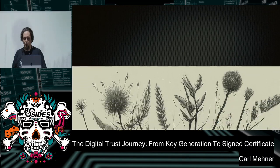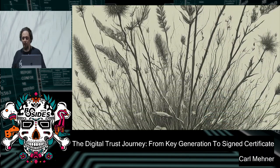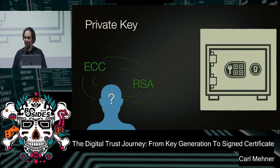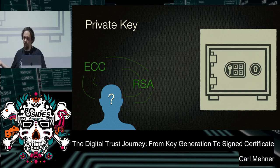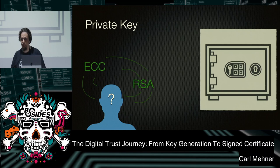Welcome to the In the Weeds track — we're going to dive all the way down to the root of certificates. To start, we're going to need a private key. Right now there are just two types: elliptic curve digital signature algorithm and RSA. Those are the only two that are allowed on the public web to be signed by trusted certificate authorities.